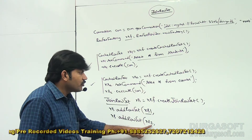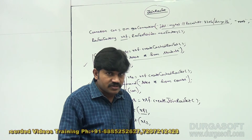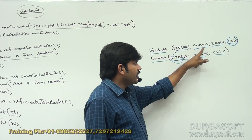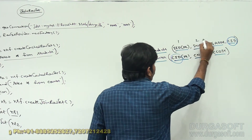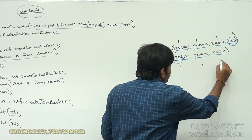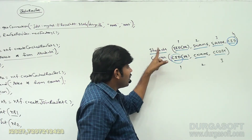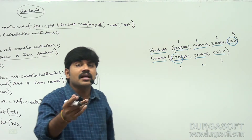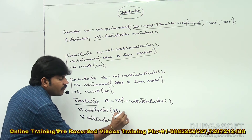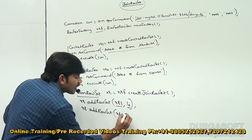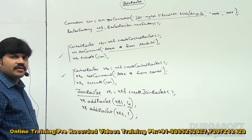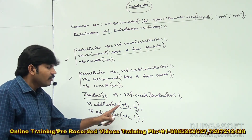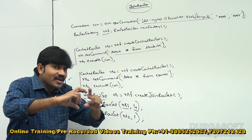rs1 contains students data and rs2 contains courses data. To join two rowsets into a single rowset, a common column must be there. The common column is 'cid'. For the students table, the column index of 'cid' is 4 (student_id=1, student_name=2, student_address=3, course_id=4). For the courses table, the common column 'cid' is at index 1. These common column indices must be specified. The JoinRowSet is now ready.